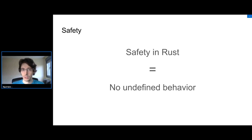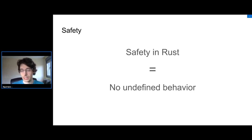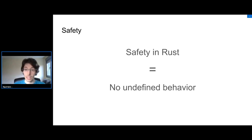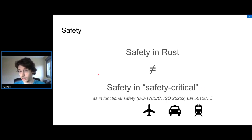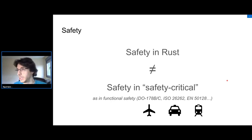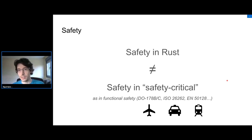It's important to clarify from the get-go: safety in Rust doesn't mean safety in some safety-critical sense. It means no undefined behavior when coming from C. Rust basically says there is no undefined behavior in the safe subset of Rust — that is exactly what it means. It's not related to functional safety, which is more about requirements, traceability, independence of quality assurance, etc.